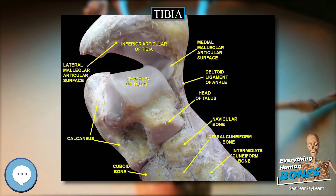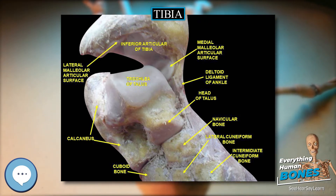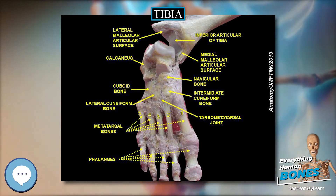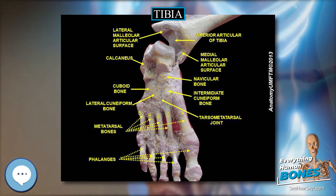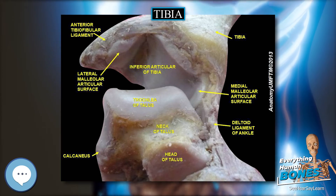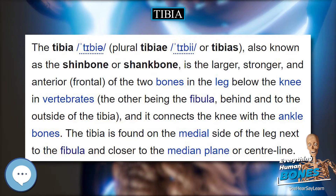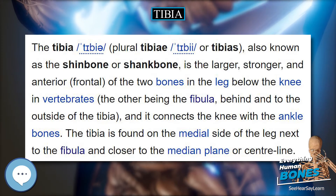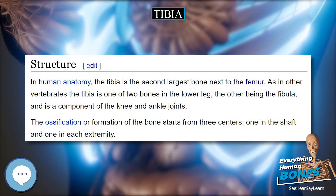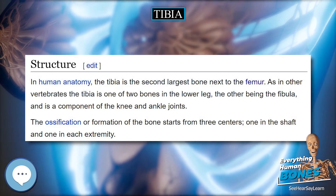Together with the medial and lateral condyle, the intercondylar region forms the tibial plateau, which both articulates with and is anchored to the lower extremity of the femur. The intercondylar eminence divides the intercondylar area into an anterior and posterior part. The anterolateral region of the anterior intercondylar area is perforated by numerous small openings for nutrient arteries. The articular surfaces of both condyles are concave, particularly centrally.